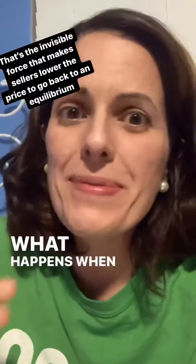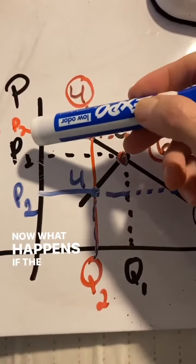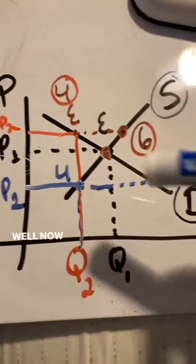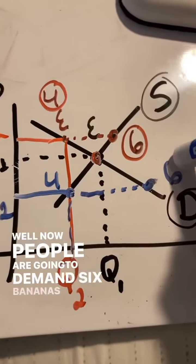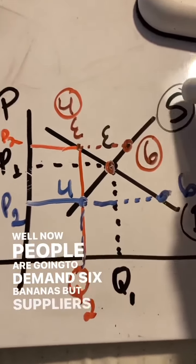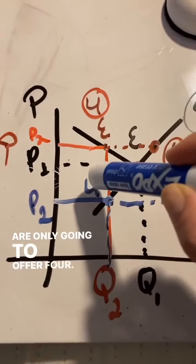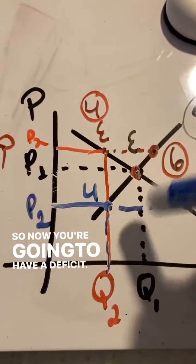What happens when the price goes down? Now people are going to demand six bananas, but suppliers are only going to offer four. So now you're going to have a deficit.